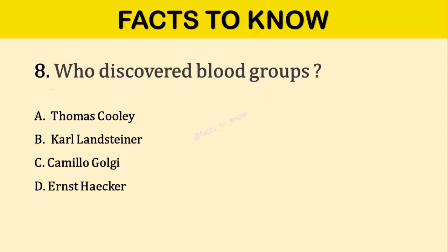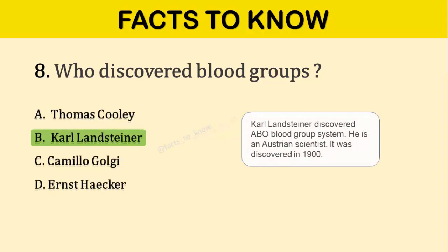Question number eight: Who discovered blood groups? The correct answer is option B: Karl Landsteiner. Karl Landsteiner discovered the ABO blood group system. It was discovered in the 1900s.